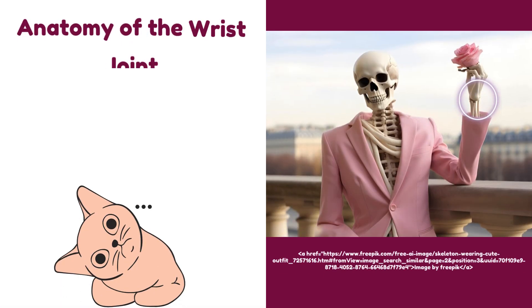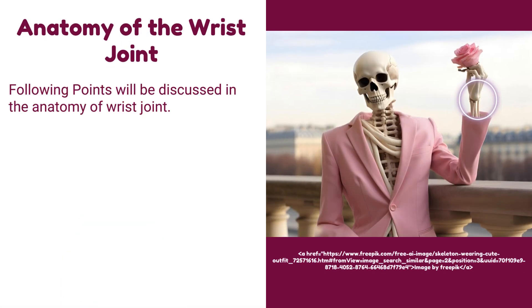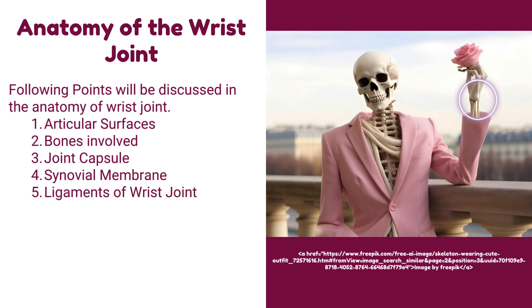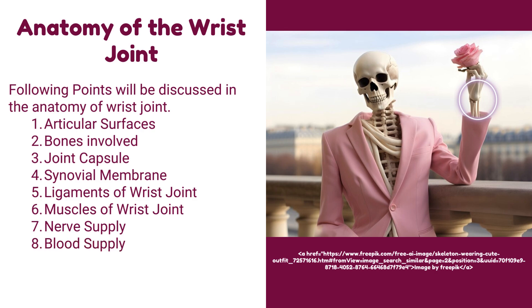The following points will be discussed in the anatomy of the wrist joint: articular surfaces, bones involved, joint capsule, synovial membrane, ligaments of the wrist joint, muscles of the wrist joint, nerve supply, and blood supply.